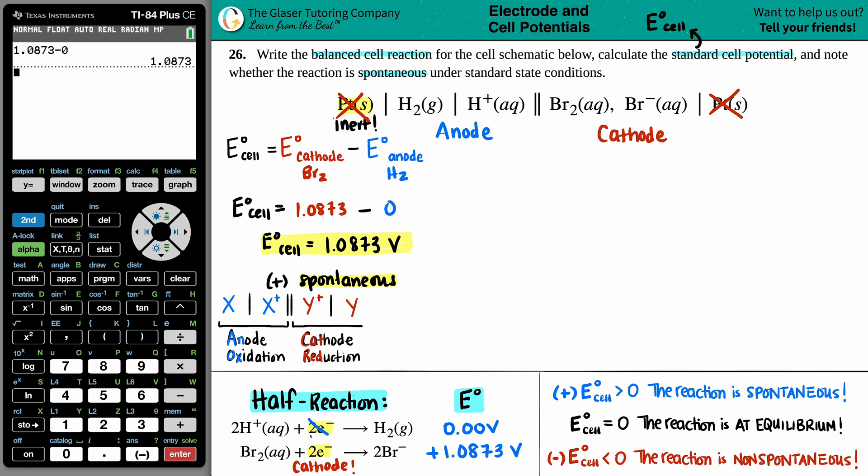I don't want these electrons on the left side. I want them on the other side. So what am I going to do to get those electrons on the other side? I need to flip that reaction. So anything that's on the left goes to the right, and anything that goes on the right goes to the left. It doesn't matter which one you say first, whether you do the anode or the cathode. I'm just going to go from left to right. So I'll write the anode first.